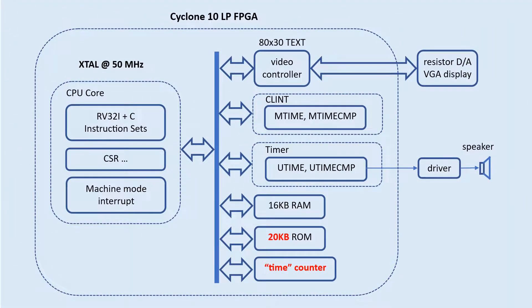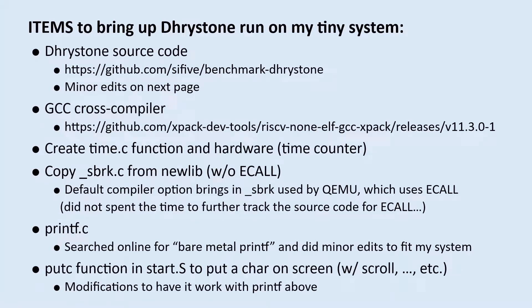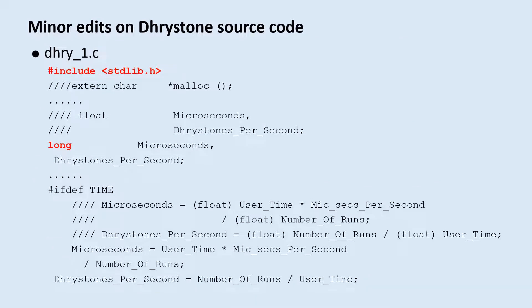The RISC-V design is pretty much what I had before, except I added a time counter just for convenience. This is a list of items I needed to have my Dhrystone program run. I did need to do some minor edits on the source code to avoid some problems I had. I have this page just to keep track of what source code I changed — you may not need them as your system would be different.